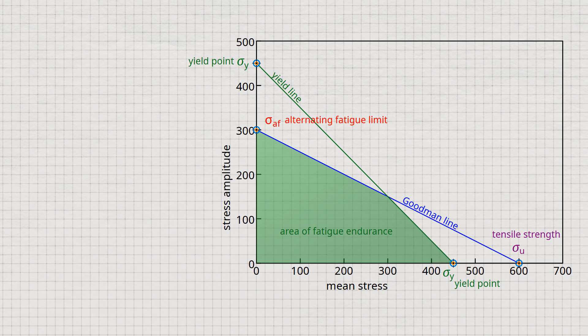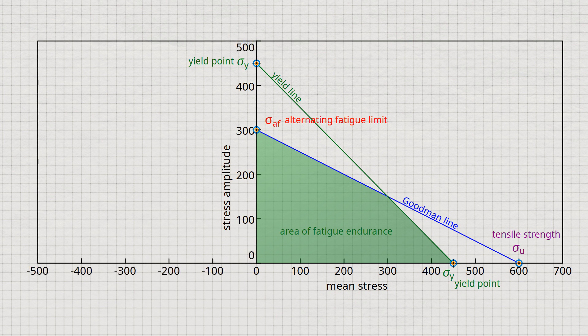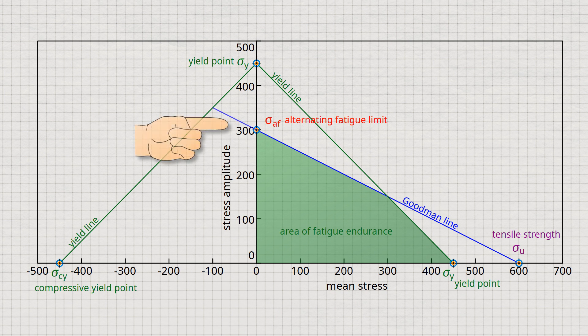In principle, the Hay diagram can also be extended to negative mean stresses, and thus the fatigue limits for compressive loads can be shown. The compressive yield point sigma_cy is then used as the limiting value for the mean stress. This value is plotted on both axes in the same way as for tensile stress and connected by a straight line. Note that for steels, the compressive yield point and the tensile yield point usually have the same value. The extrapolation of the Goodman line finally limits the area of fatigue endurance, though whether this extrapolation is permissible must be checked separately.